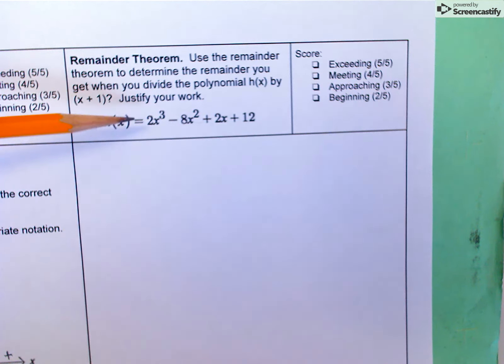So instead of taking this polynomial and dividing by this expression using long division or some other technique, I can just think of the value that causes this to equal 0 and plug it in. Instead of doing long division, I can do a substitution problem, which is much easier. That's really what the remainder theorem gives us—a way of quickly figuring out the remainder without going through all the division.